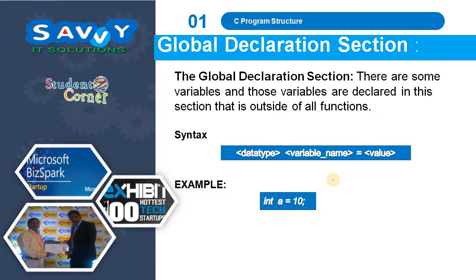The next one is the global declaration section. In this section there are variables declared outside of all the functions. Whenever we create a variable we follow the syntax: data type, variable name, equals value. If a variable is declared after the hash include directives but above the main function, it becomes a global variable.